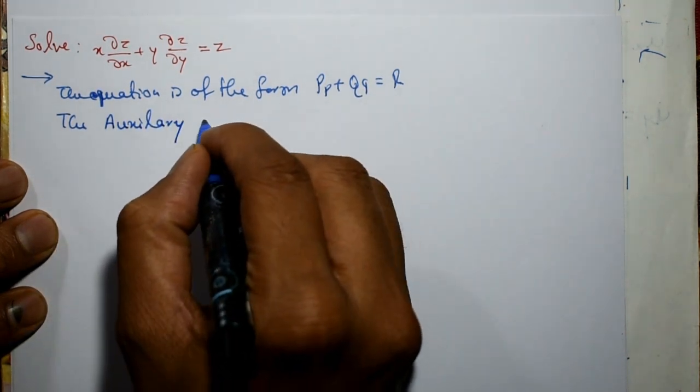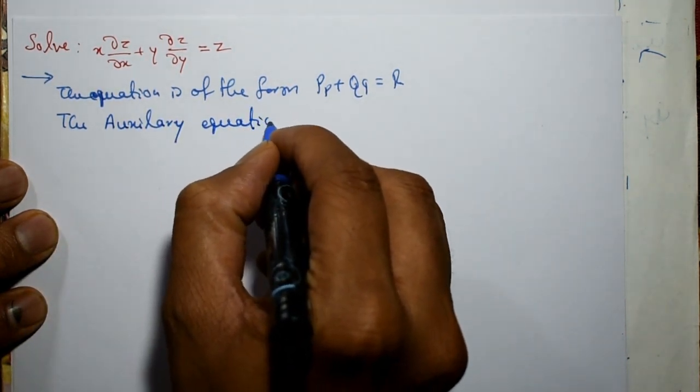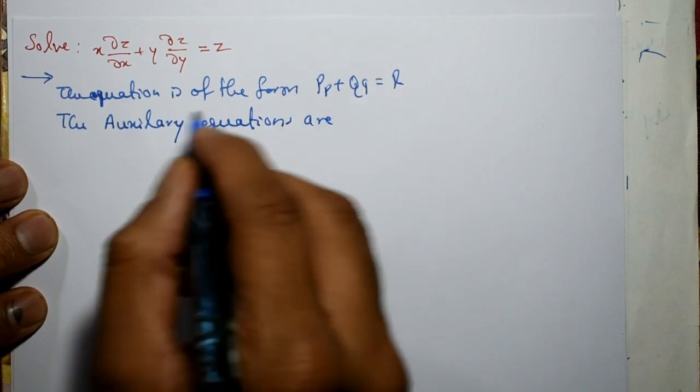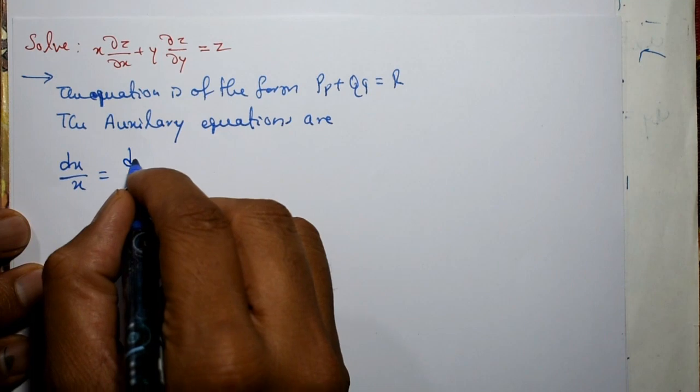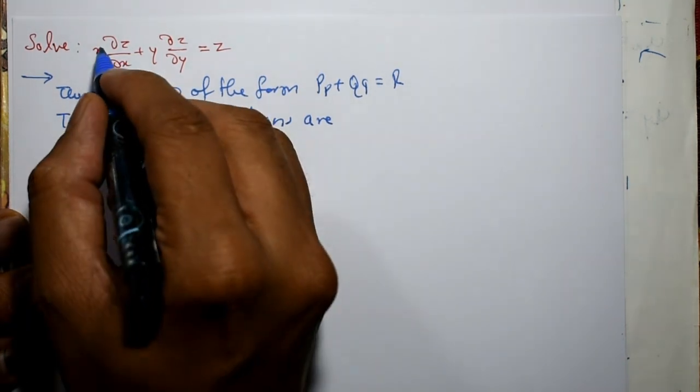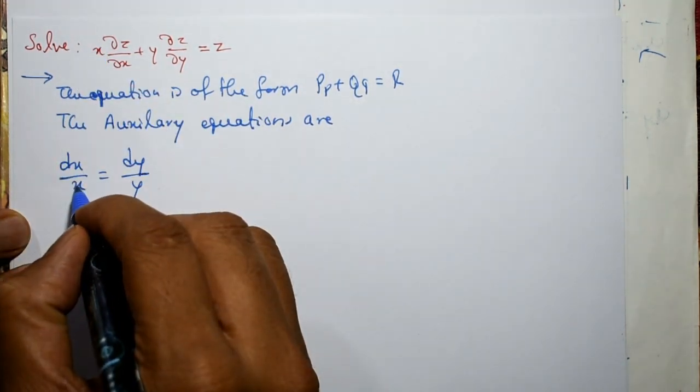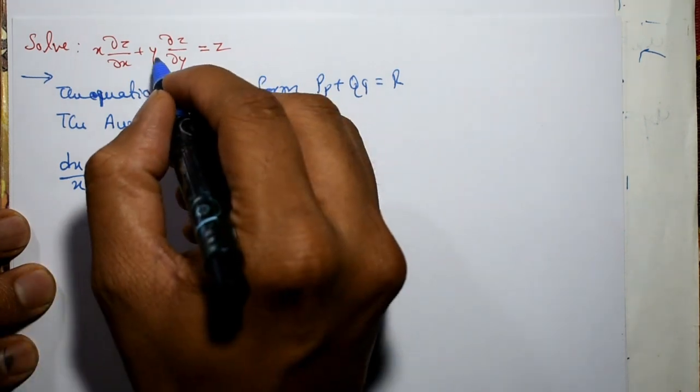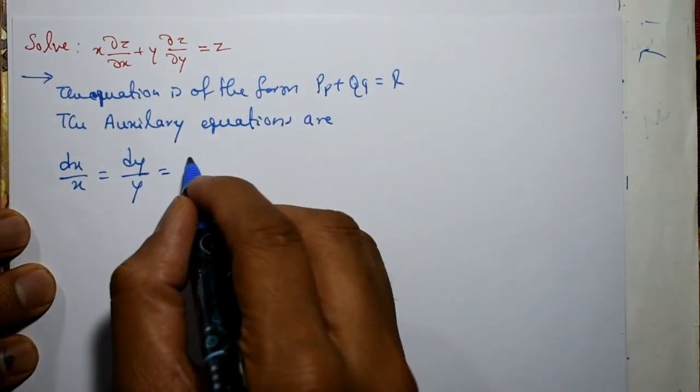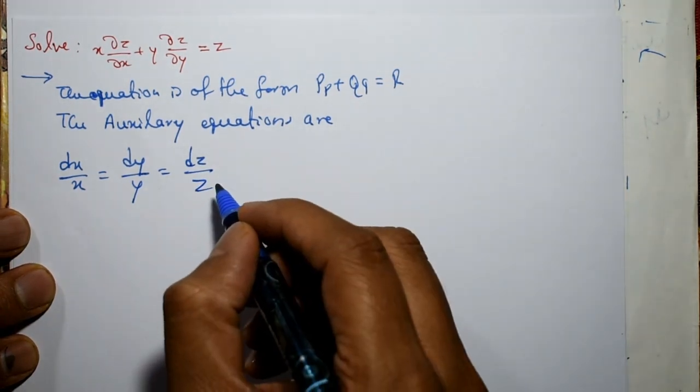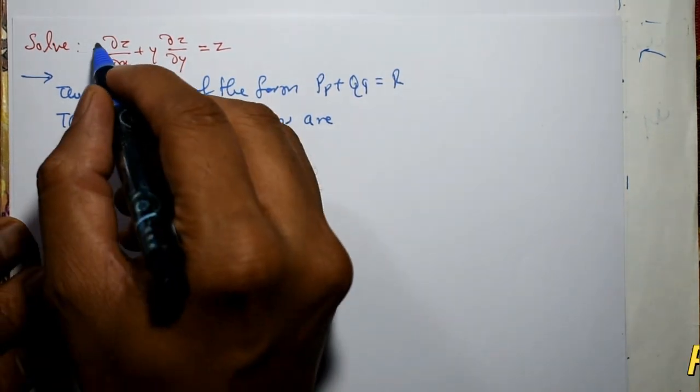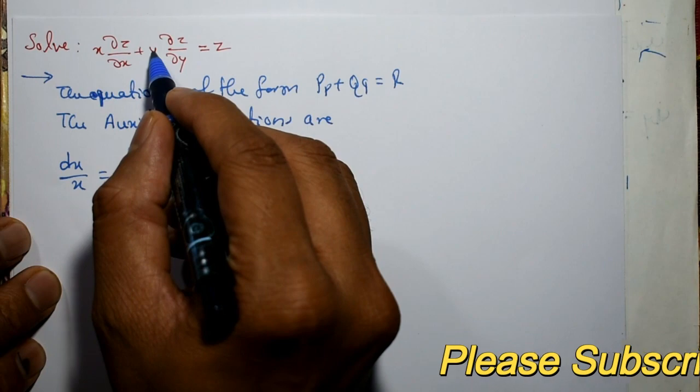Auxiliary equations are dx/x = dy/y, taking this part dx/x and dy/y, and equal to dz/z. This R part is z. Now this is P, Q, and R.